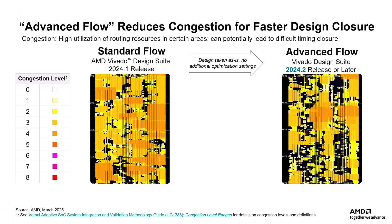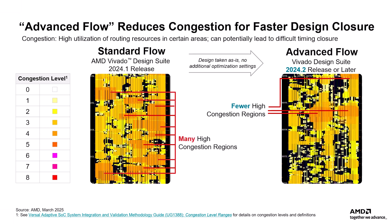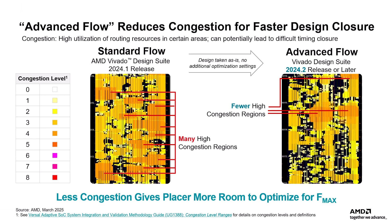This is because the advanced flow placer takes long, short, and global congestions into consideration while placing. The design with advanced flow shows fewer high congestion regions — shown by dark orange, that is level 4 — and also better placement, whereas the design with standard flow shows densely populated regions with many high congestion areas shown by dark orange color. Overall, less congestion means the placer has more room to optimize for FMAX and faster routing.